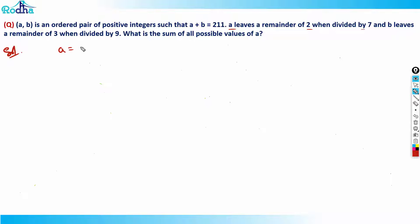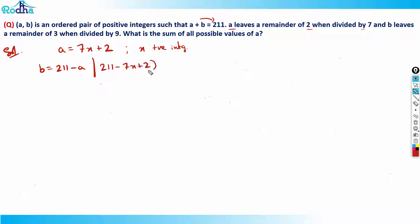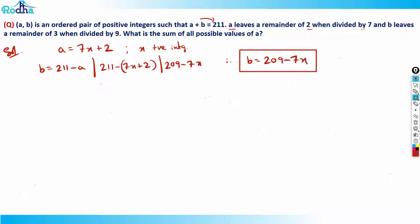Since a leaves a remainder of 2 when divided by 7, I can write a = 7x + 2, where x is a positive integer. From a + b = 211, b = 211 minus a = 211 minus (7x + 2), which gives b = 209 minus 7x.